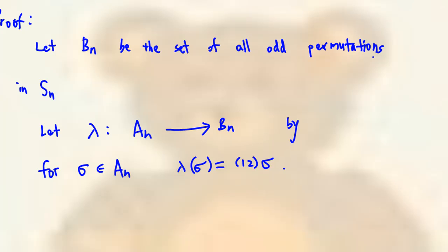Identify a mapping lambda from A sub n to B sub n given by, for every even permutation sigma in A sub n, the image of sigma under lambda is equal to (1 2) times sigma. Then we know (1 2) times sigma is an element in B sub n since sigma can be written as a product of even number of transposition.